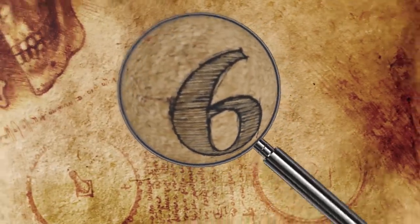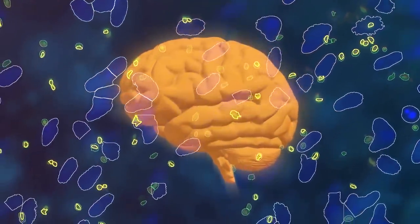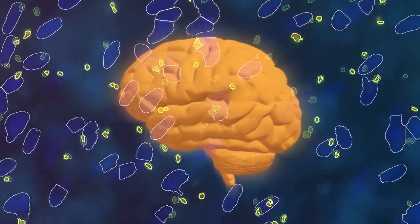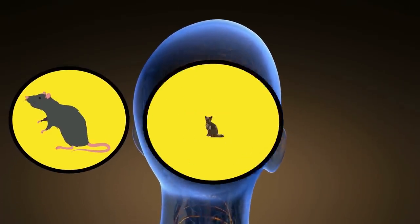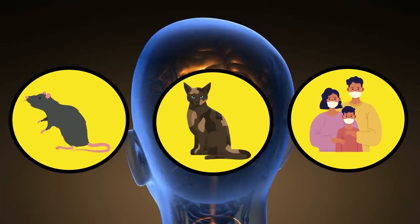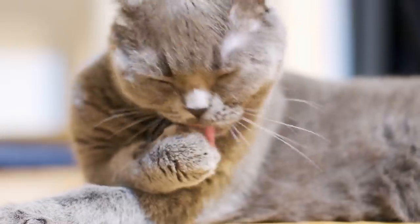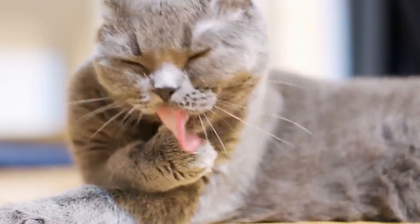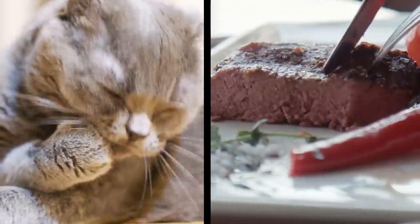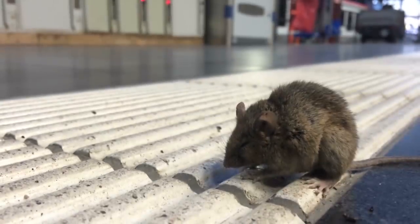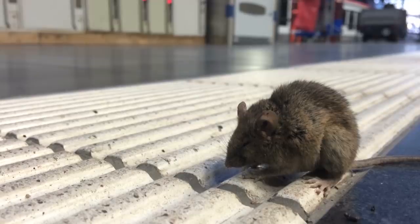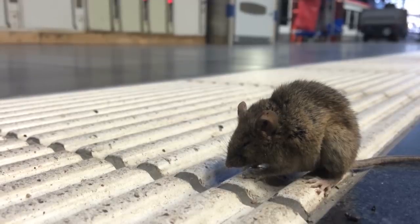Number 6: Toxoplasma gondii. Toxoplasma gondii is one of the world's most common neurological parasites. It infiltrates the brains of its hosts, including rats, cats, and sometimes even humans, and can severely alter an individual's behavior. While most people think it comes from cats, you are more likely to get it from eating undercooked or contaminated meat, especially pork and lamb, or shellfish. The protozoan parasite's eggs are often present in cat feces that is ingested by rats and certain other hosts.